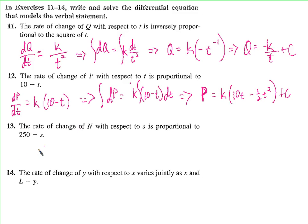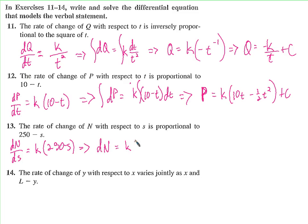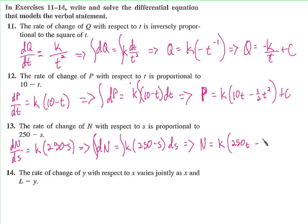Next: the rate of change of n with respect to s is dn/ds, proportional to (250 minus s), so it equals k times (250 minus s). Not very different from the last one. Multiply both sides by ds: dn equals k(250 minus s) ds. Take the antiderivative of both sides: n equals k times (250s minus one-half s squared) plus C.